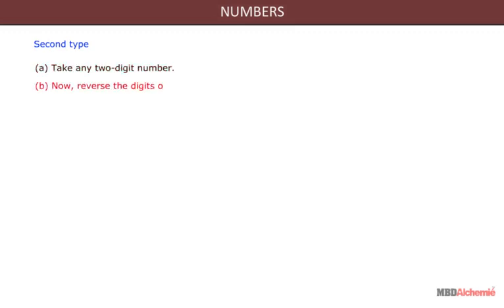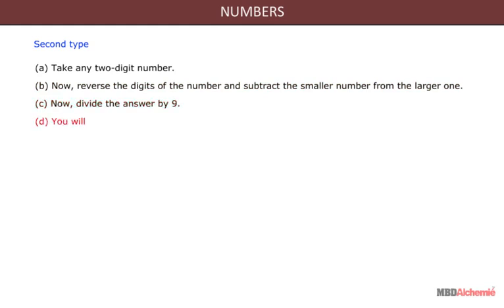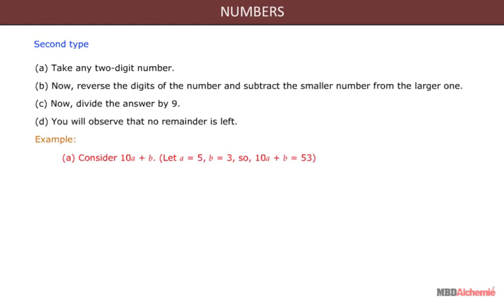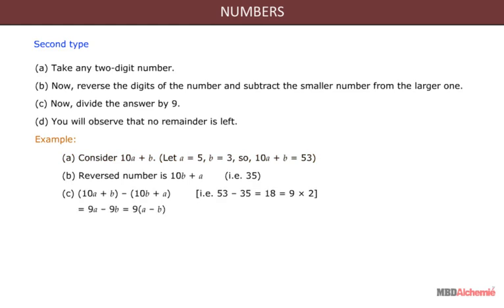Second type: Take any two digit number, reverse the digits, and subtract the smaller number from the larger one. Divide the answer by 9 — you will observe that no remainder is left. Consider 10a plus b: let a equal 5 and b equal 3, so 10a plus b equals 53 and the reversed number is 35. Therefore 53 minus 35 equals 9a minus 9b equals 9(a minus b) equals 18 equals 9 into 2. Dividing by 9 gives 2 with no remainder.